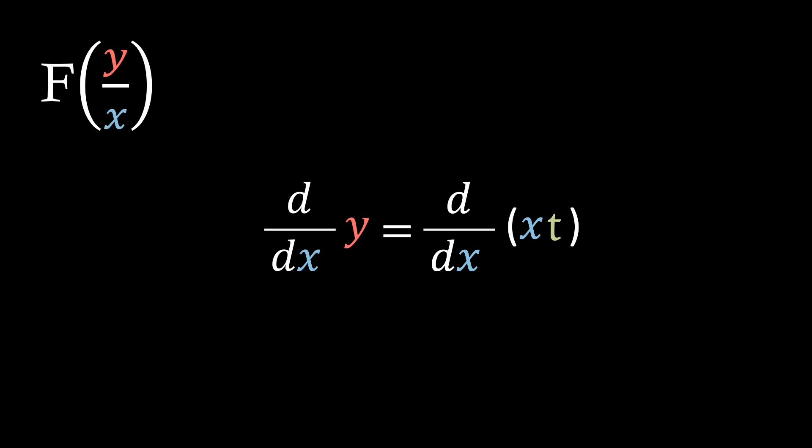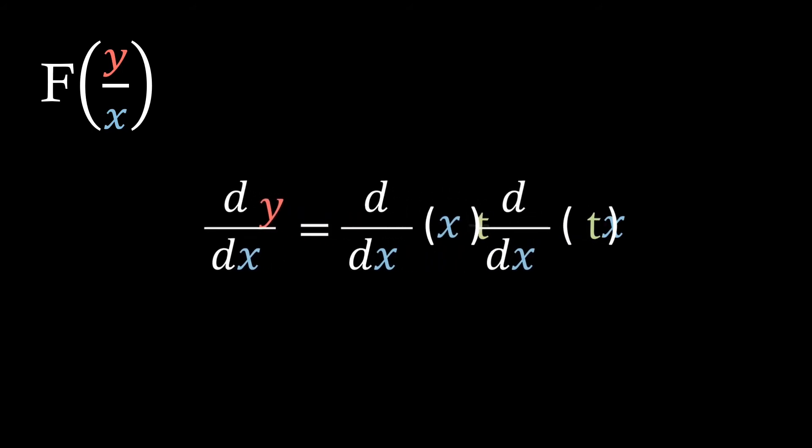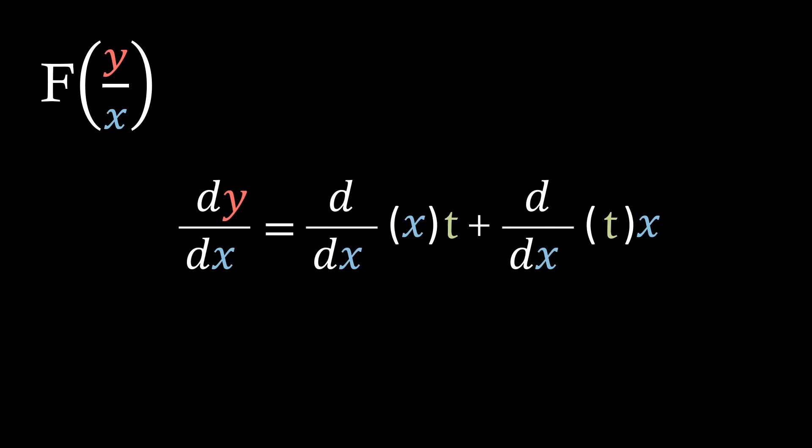If we think back to what type of solutions that we want we're trying to find a function of y in terms of x. This means that t of x will actually be a function of x as well. Hence we have to use the product rule here to which we can just see that dy over dx equals t plus dt over dx times x. This is key to remember and we'll come back to it in just a minute.